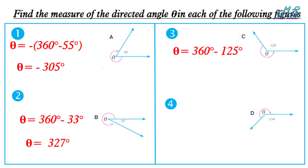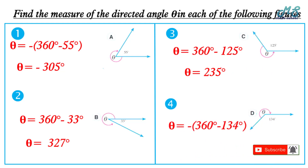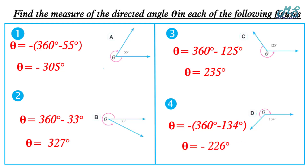Number three — we have a positive measure. Theta equals 360° − 125° = 226°.